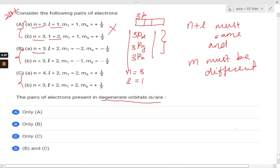In option B we can see n equals to 3, l equals to 2, and n equals to 3, l equals to 2, and m is different. So this one is degenerate orbitals because n and l are same.